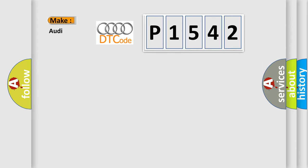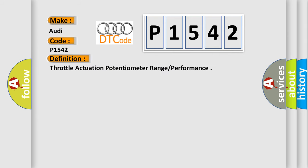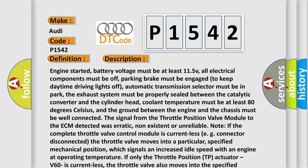So, what does the diagnostic trouble code P1542 interpret specifically for Audi car manufacturers? The basic definition is: Throttle actuation potentiometer range or performance. Here is a short description of this DTC code.